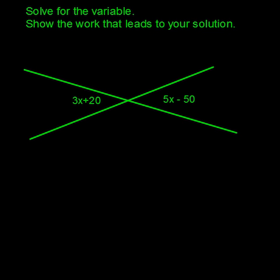Here's another example where we've got to solve for the variable and show the work that leads to your solution. Now one of the things we want to take a look at here is the placement of our two angles. We've got 3x plus 20 and across from it we've got 5x minus 50.